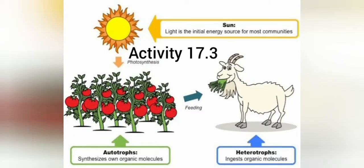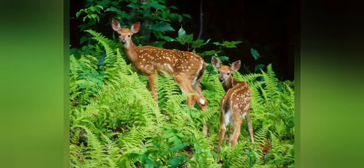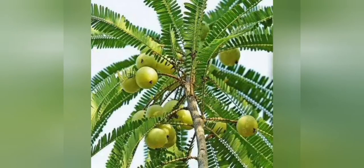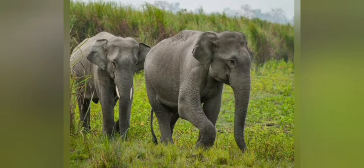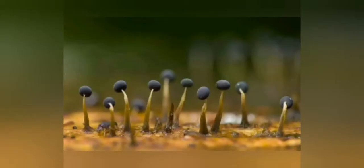Activity 17.3. You have read about autotrophs, heterotrophs, and saprotrophs. Autotrophs are organisms which prepare their own food — green plants are autotrophs. Heterotrophs depend on plants for their food, for example animals and human beings. Saprotrophs are living organisms which depend on dead and decaying matter for their food, as we have studied in the first lesson.